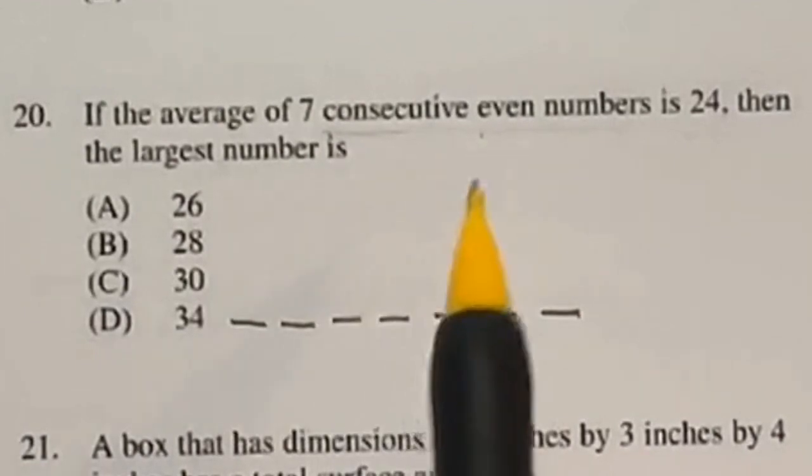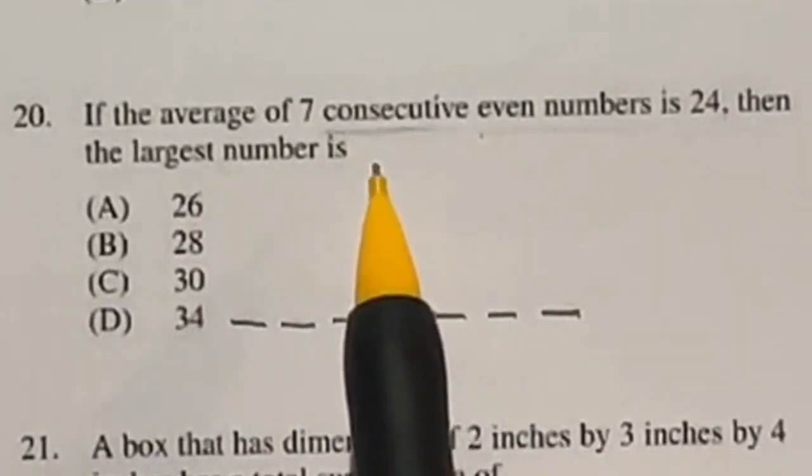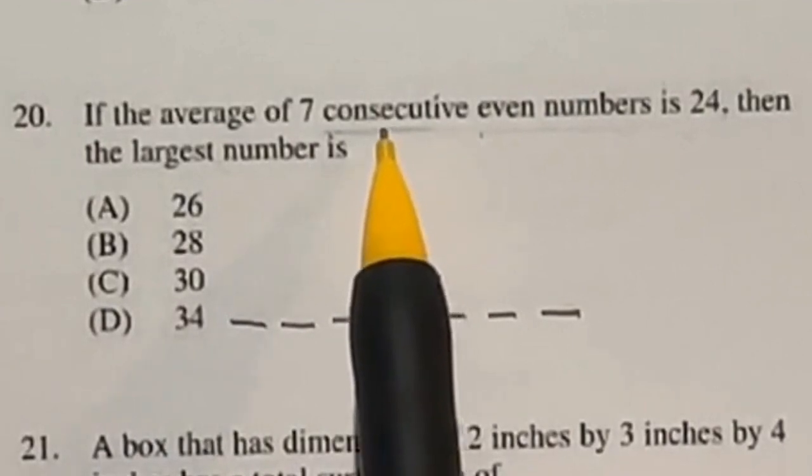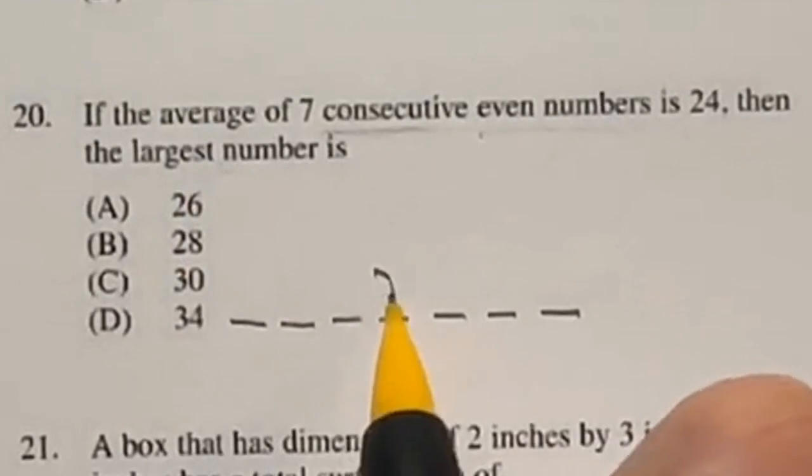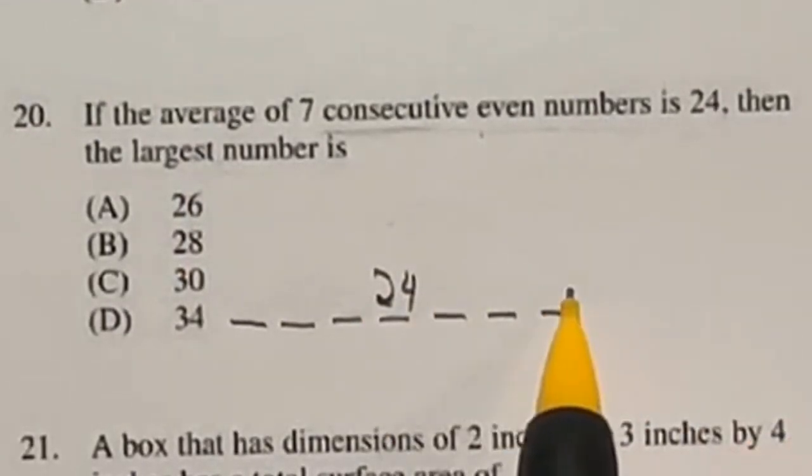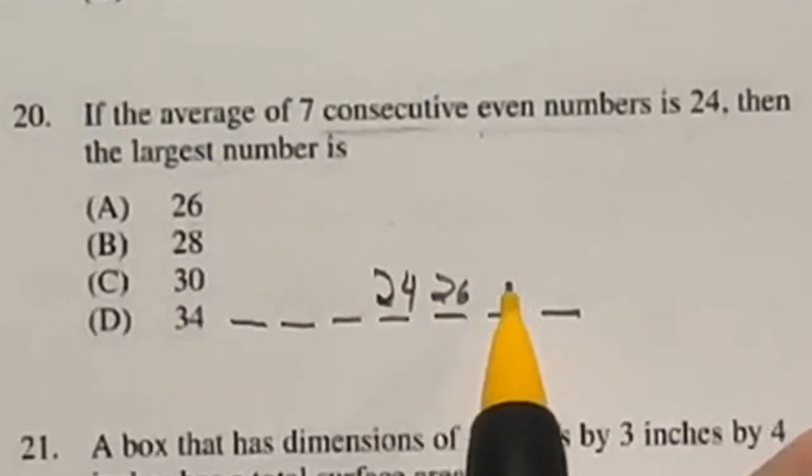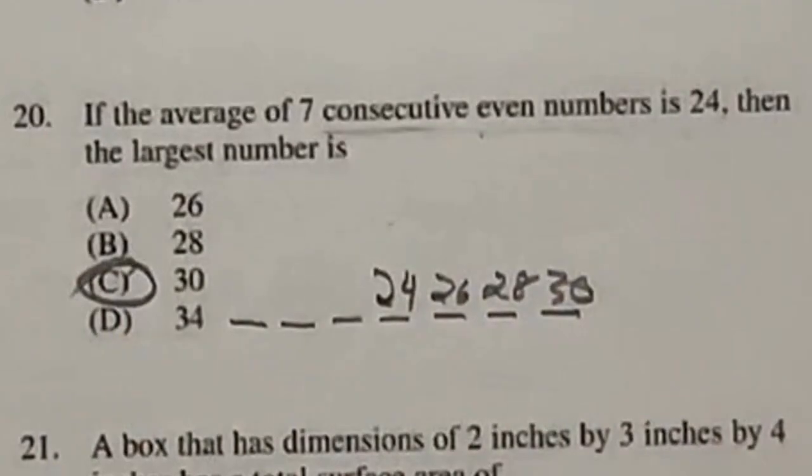So they want to know the largest number. Because these are all evenly spaced out being consecutive, the middle number is in this case, the median, is going to be the same as our average, our mean. So that means that the middle number here has to be 24. From there, we just have to work by jumping by 2s to get to our largest number. So that would be 26, 28, and 30 as our largest number. So C is the answer.